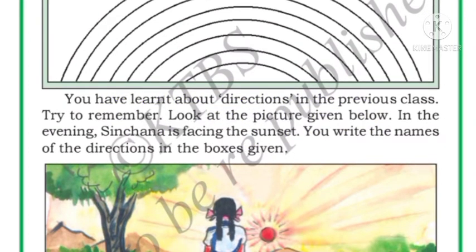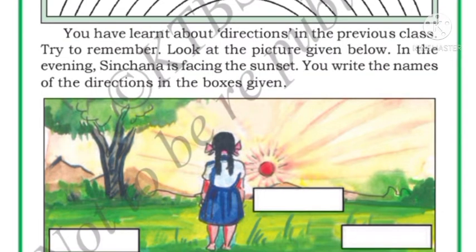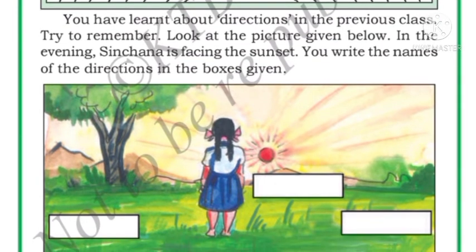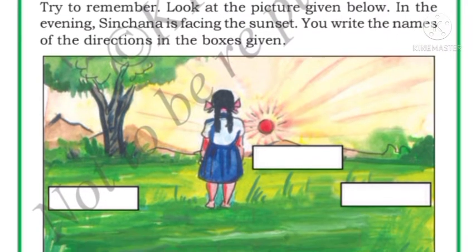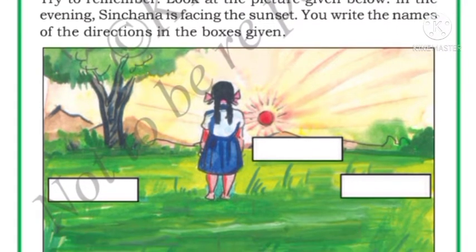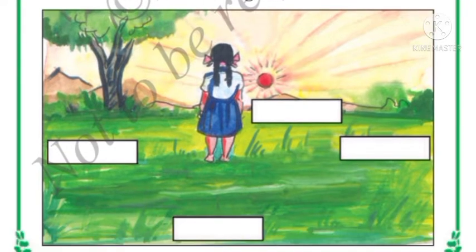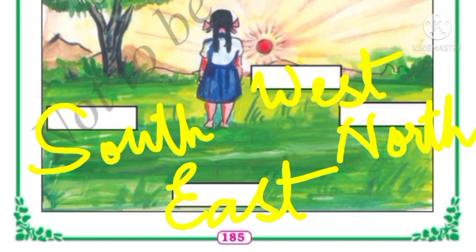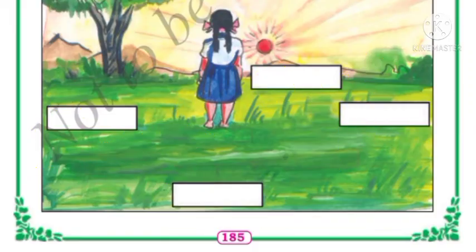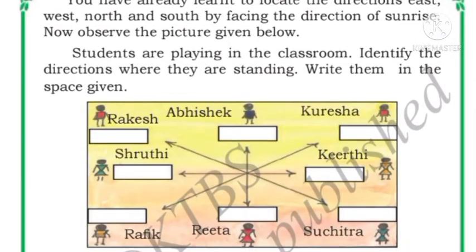You have learned about directions in the previous class. In the evening, Sinchana is facing the sunset — write the names of the directions in the boxes given. The sun sets in the West and rises in the East. So facing the sunset: West is in front, East is behind, North is to the right, and South is to the left.